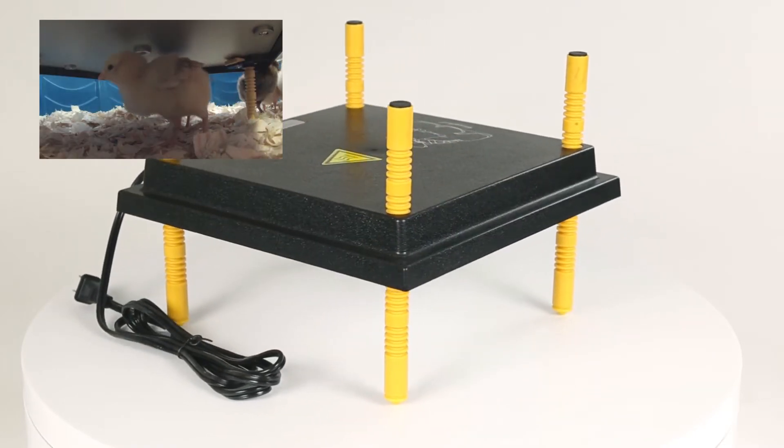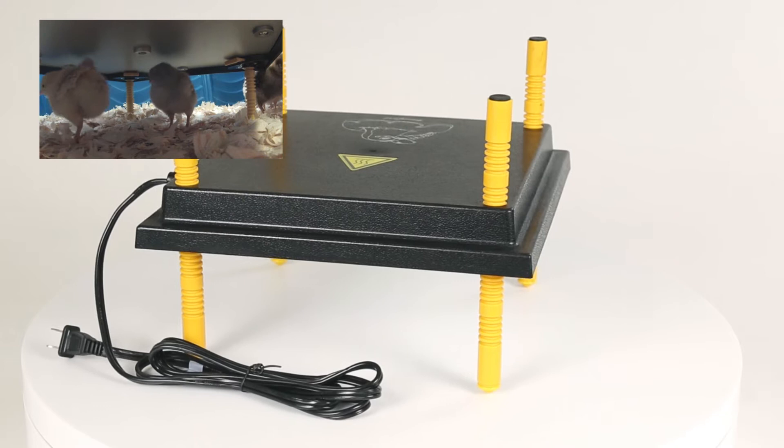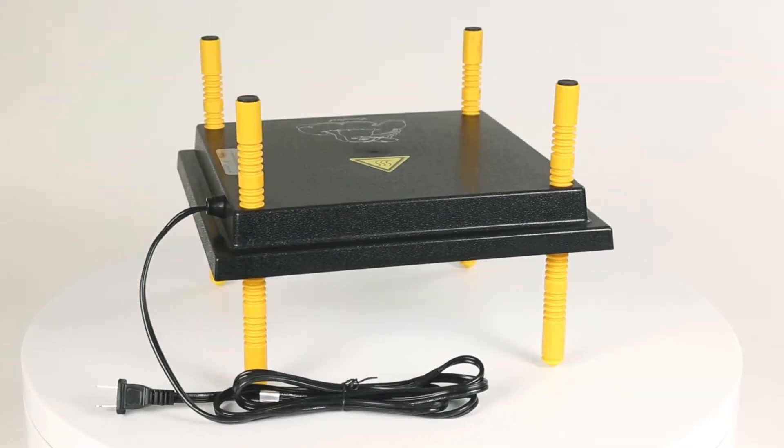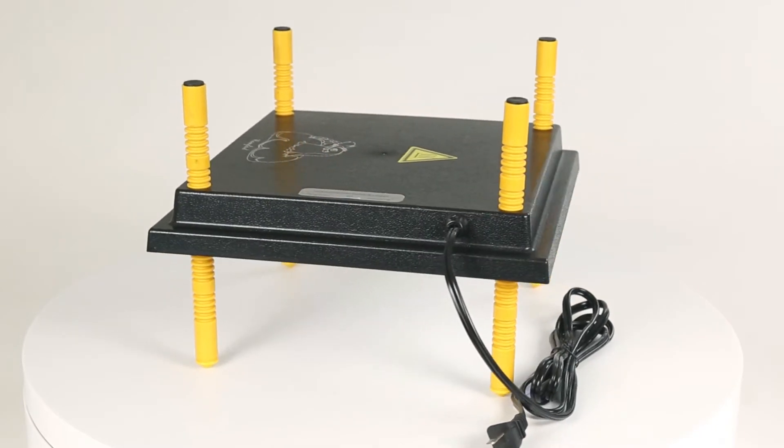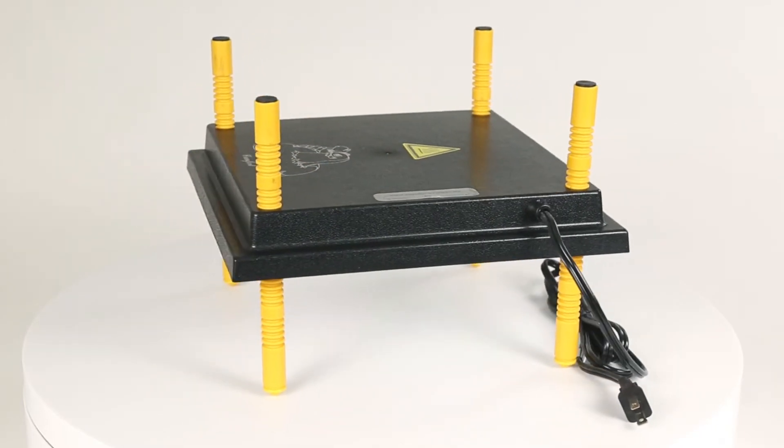The comfort plate eliminates hot spots common with heat lamps to provide your chicks with superior even heat. The steady comfortable surface temperature of 120 to 130 degrees allows chicks to directly contact the heat source just like a brooding hen.